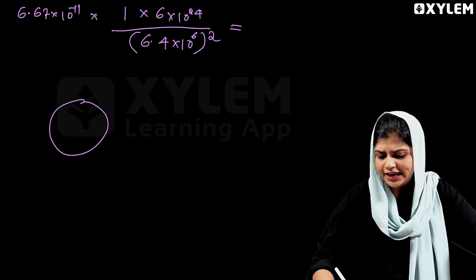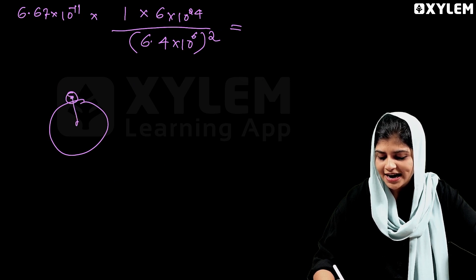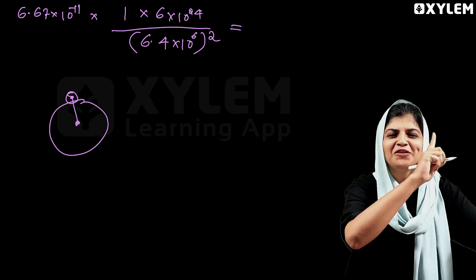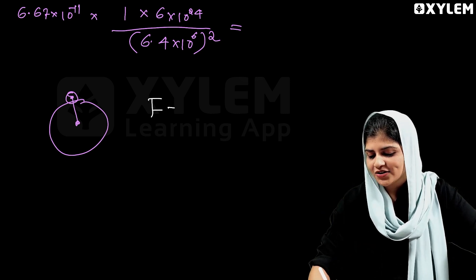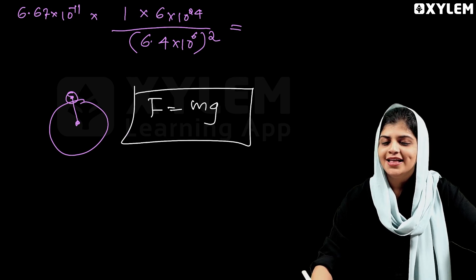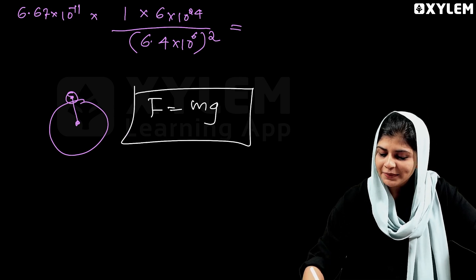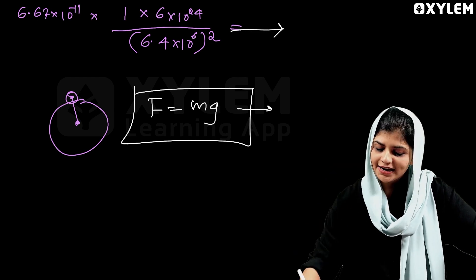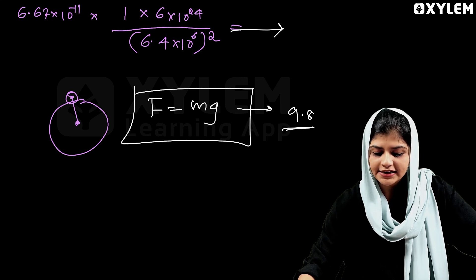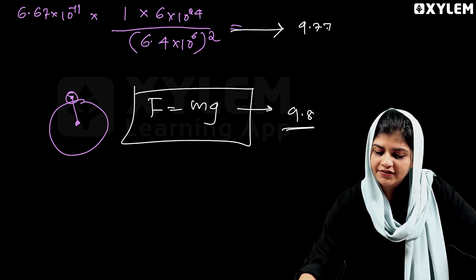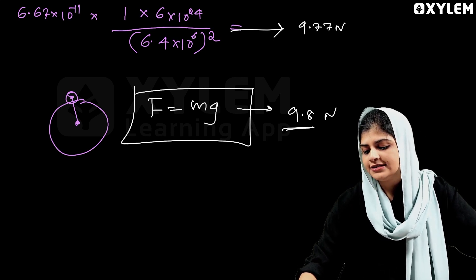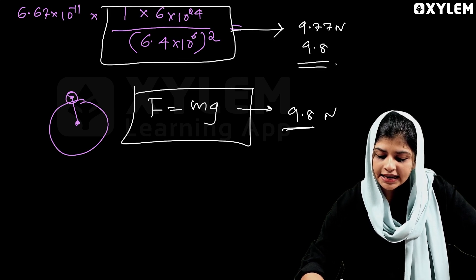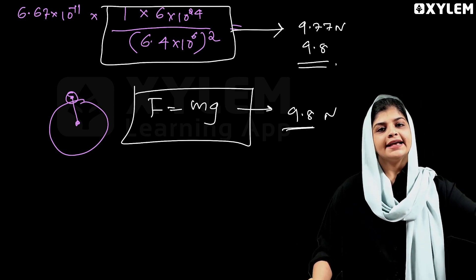If you want to solve this on the surface, you can also use another equation: F = mg. Substituting g = 9.8, the force is approximately 9.77 N, which we can approximate to 9.8 N.